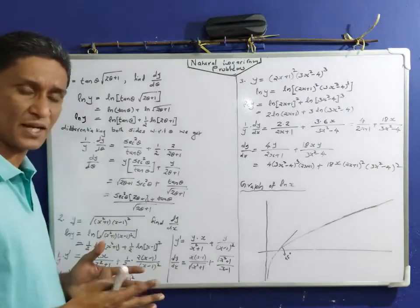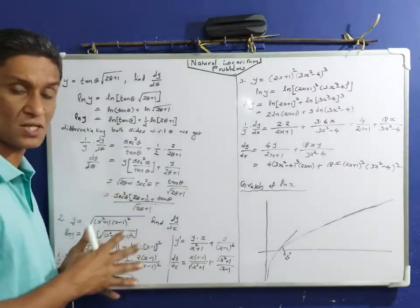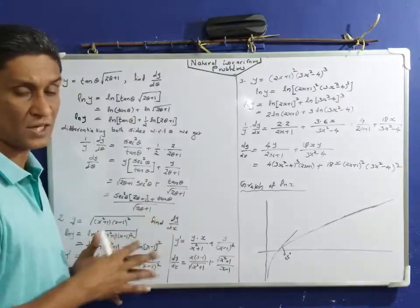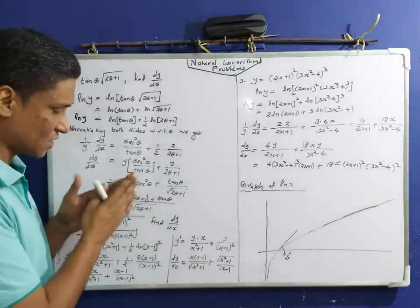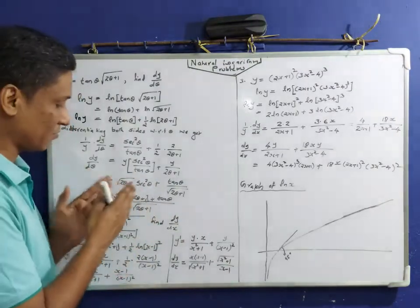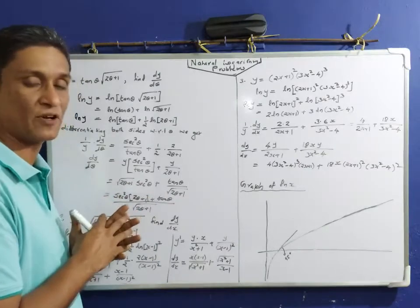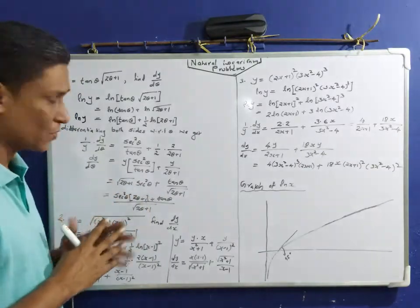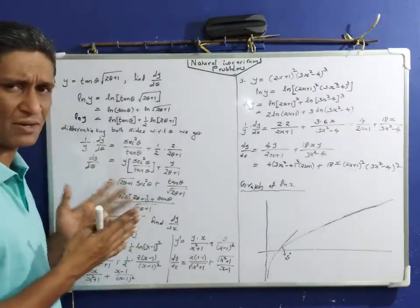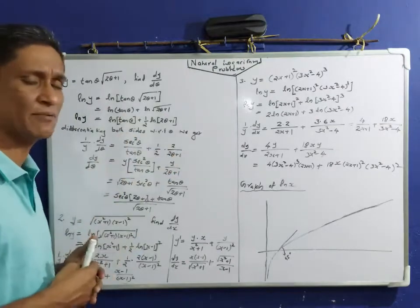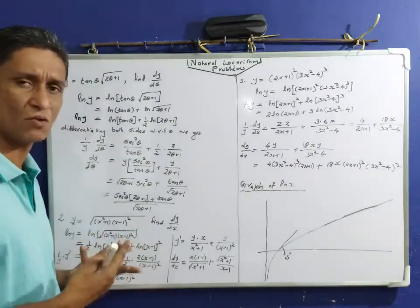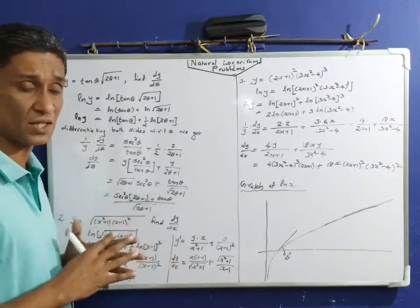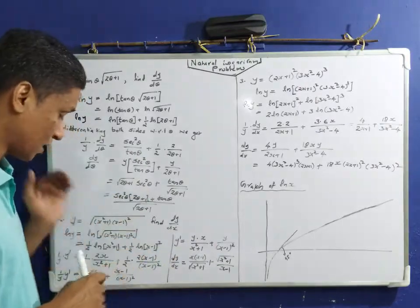This is a very good thing to explain. You have to learn about this. So that is our first problem. dy/dθ is found using logarithmic differentiation. This is a comparatively difficult question. Now come to the second problem.